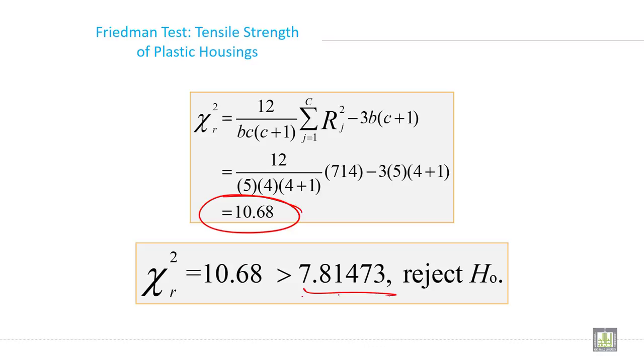So it is greater than 7.81473. So your decision will be reject the null hypothesis.